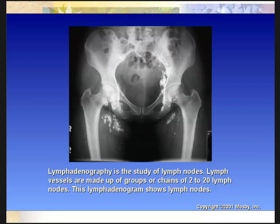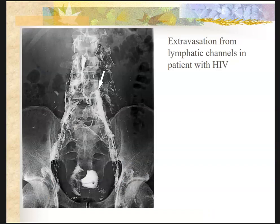This is an example of lymphadenography. This radiograph was made 24 hours after injection, so the contrast is still in the lymph nodes, but it's mostly been taken up from the lymphatic vessels. This next image is lymphography showing extravasation from the lymphatic system in a patient with HIV. HIV is a pretty destructive disease and can actually break down the lymphatic system, causing it to not be able to contain the lymphatic fluid, so this patient is probably retaining a lot of water.